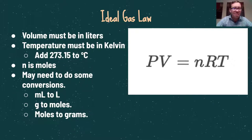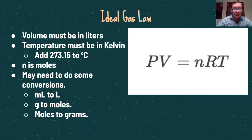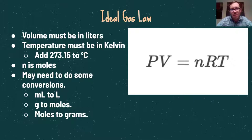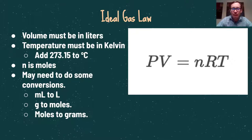Volume must be in liters, temperature must be in Kelvin, and amounts must be in moles — conversions may be required. I may give you volume in milliliters to convert to liters, a different unit of pressure, temperature in Celsius, or grams instead of moles that you'd need to convert before plugging into PV = nRT. When solving these problems, write down each individual variable and think about what conversions are needed to fit the equation.